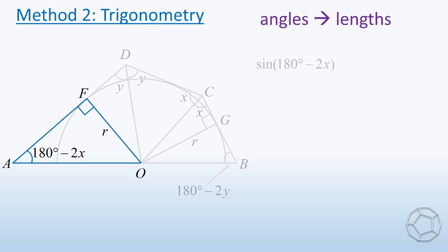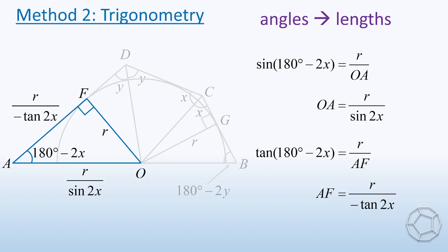Let the radius of the semicircle be R. Now, we should look at right-angled triangles. In the blue triangle, sin(180° - 2X) equals R over OA. So OA equals R over sin(2X). For the other side, tan(180° - 2X) equals R over AF. Therefore, AF equals R over negative tan(2X).